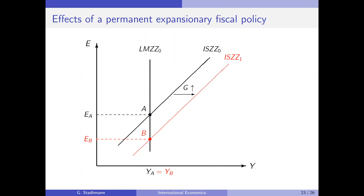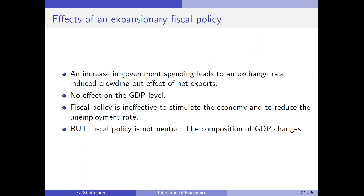So in the end, expansionary fiscal policy is not effective with respect to increasing output. An increase in government spending leads to an exchange rate induced crowding out effect of net exports. We have no effect on the GDP level — fiscal policy is ineffective to stimulate the economy and reduce the unemployment rate. But fiscal policy is not neutral, as the composition of GDP will change.